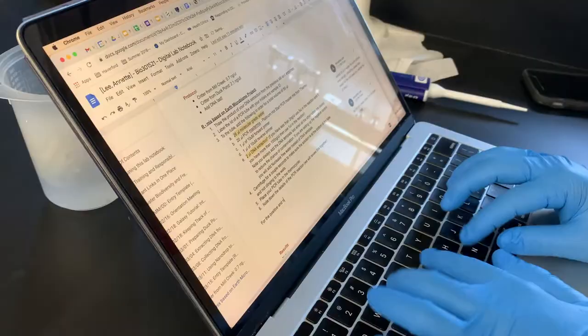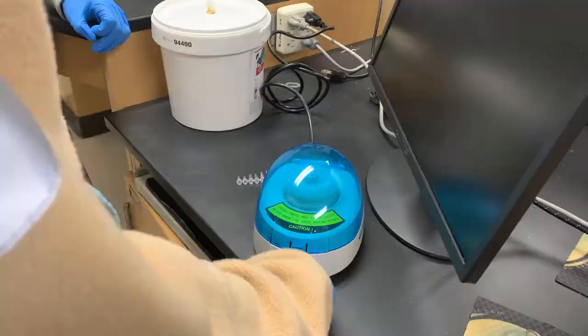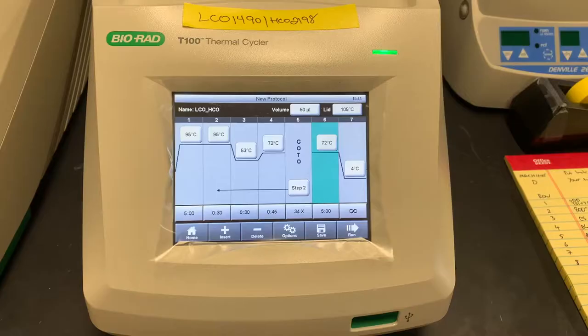After updating lab notebooks and centrifuging the PCR tubes, we briefly set them on ice while programming the PCR machines. Taking a closer look at the PCR process, there are three main stages.